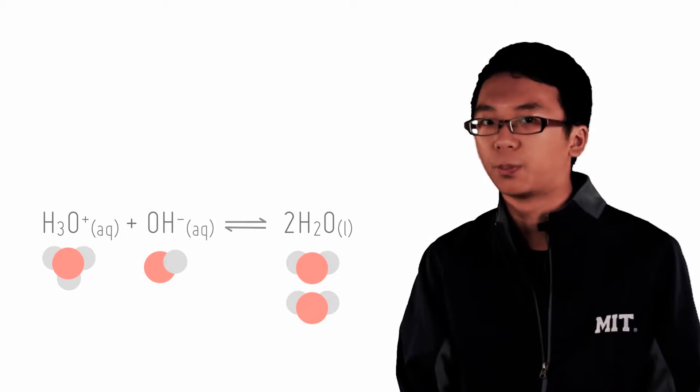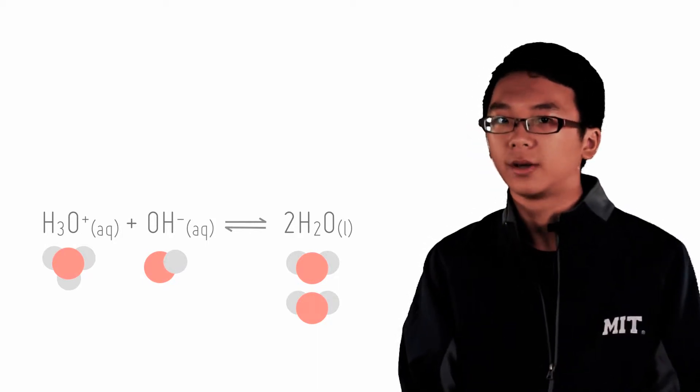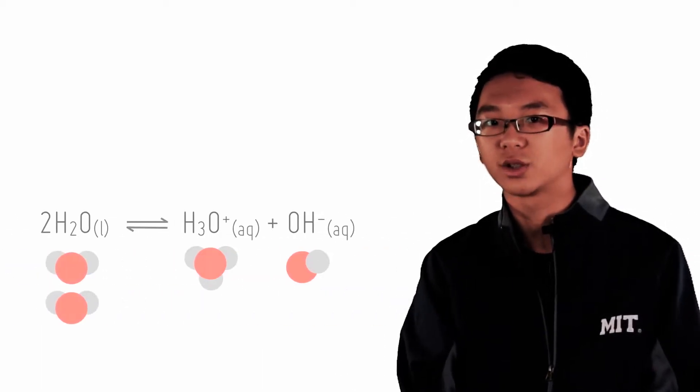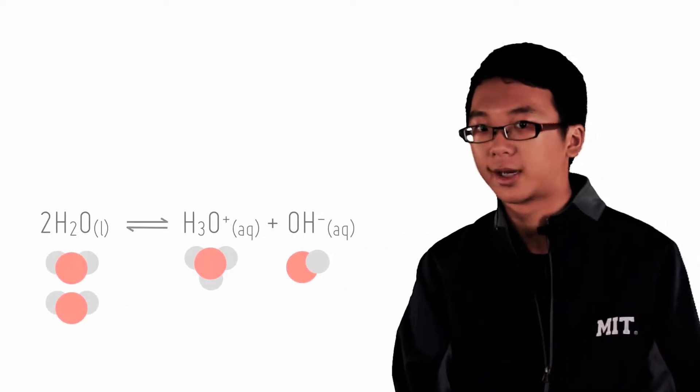What about pH and pOH both being high? Well, if the concentration of hydronium and the concentration of hydroxide are both low, water will dissociate to form more hydronium and hydroxide ions.